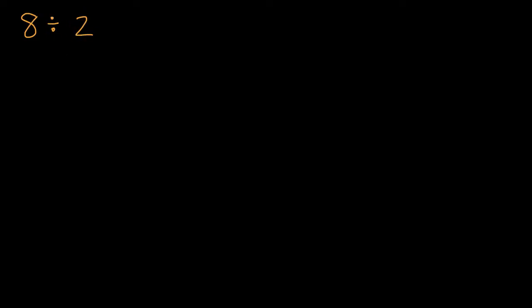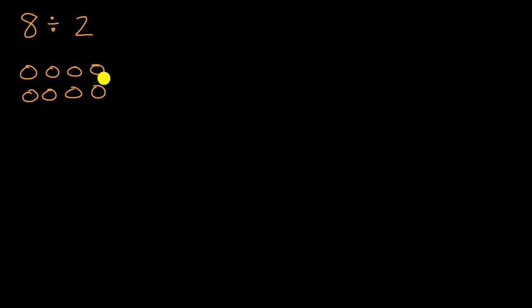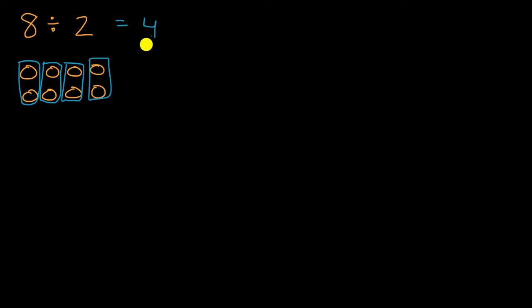We're already somewhat familiar with the idea of division. If I were to say eight divided by two, you could think of that as eight objects — one, two, three, four, five, six, seven, eight — divided into equal groups of two. How many equal groups of two could you have? Well, you could have one, two, three, or four groups of two. And so eight divided by two is equal to four.